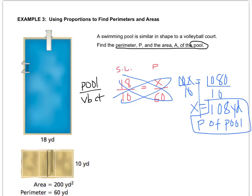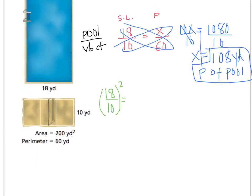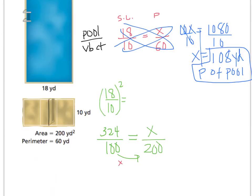Now we need to find the area of the pool. We start with the side length ratio of 18 over 10, but before setting up the proportion for area, we have to square that ratio first — giving us 324 over 100. Then we create the proportion: the area of the volleyball court is 200, which goes on the bottom. We can see it's multiplied by 2, so the area of the pool is 648 square yards.